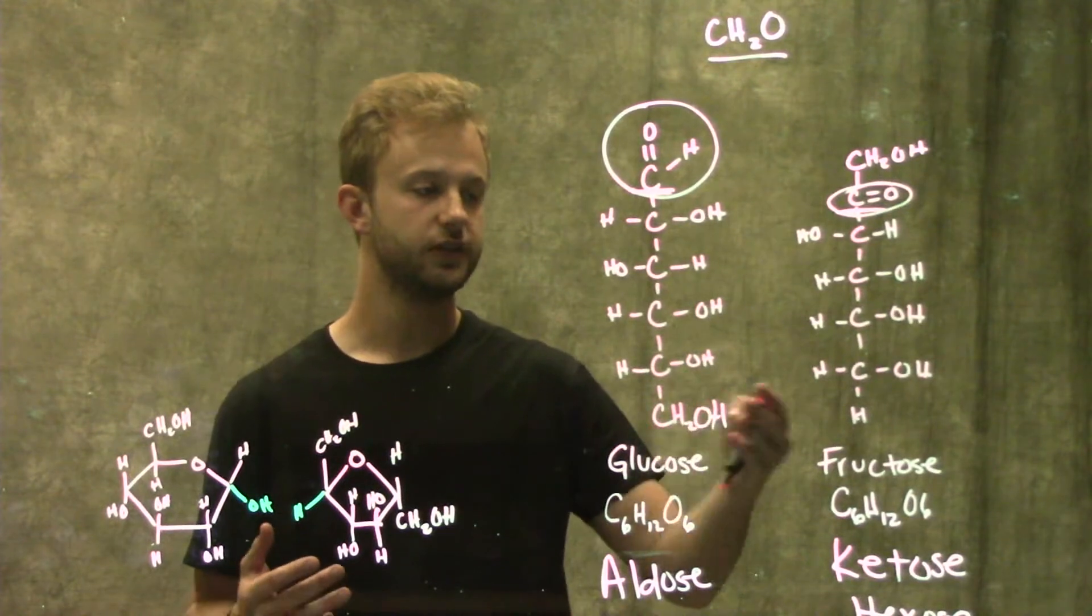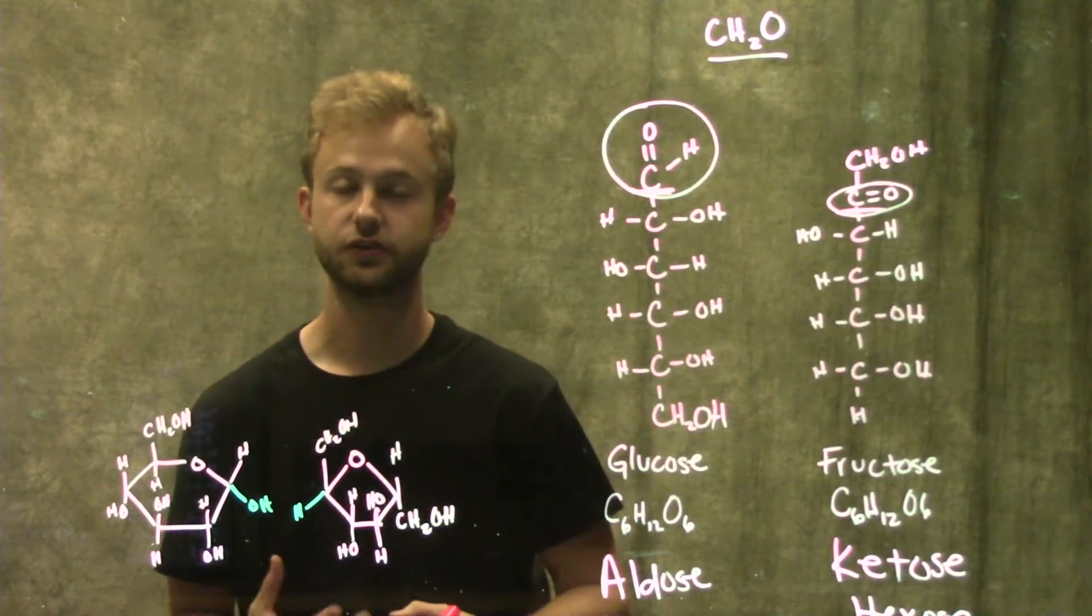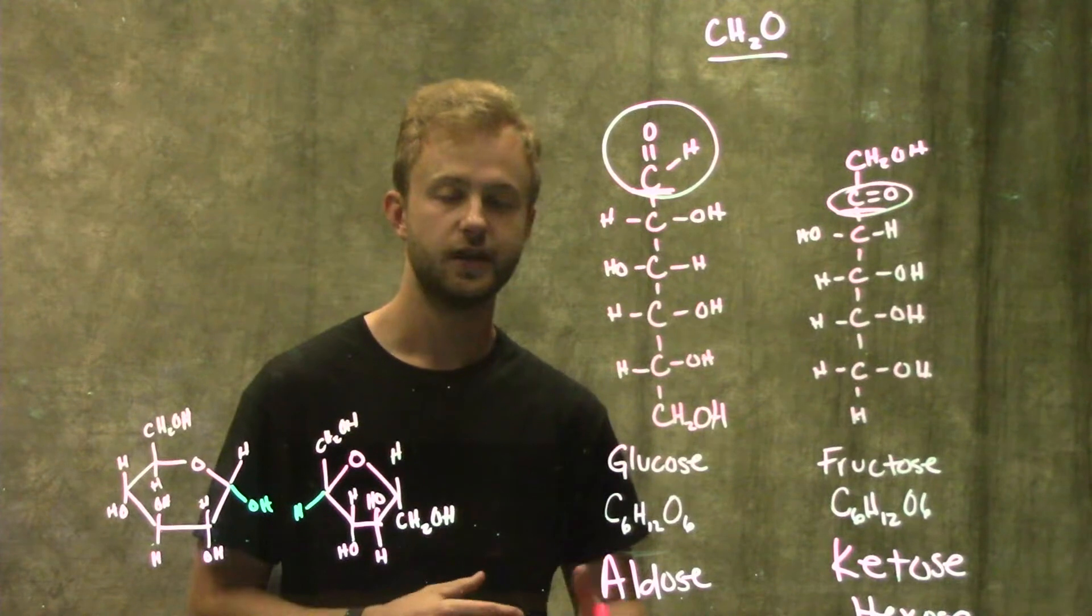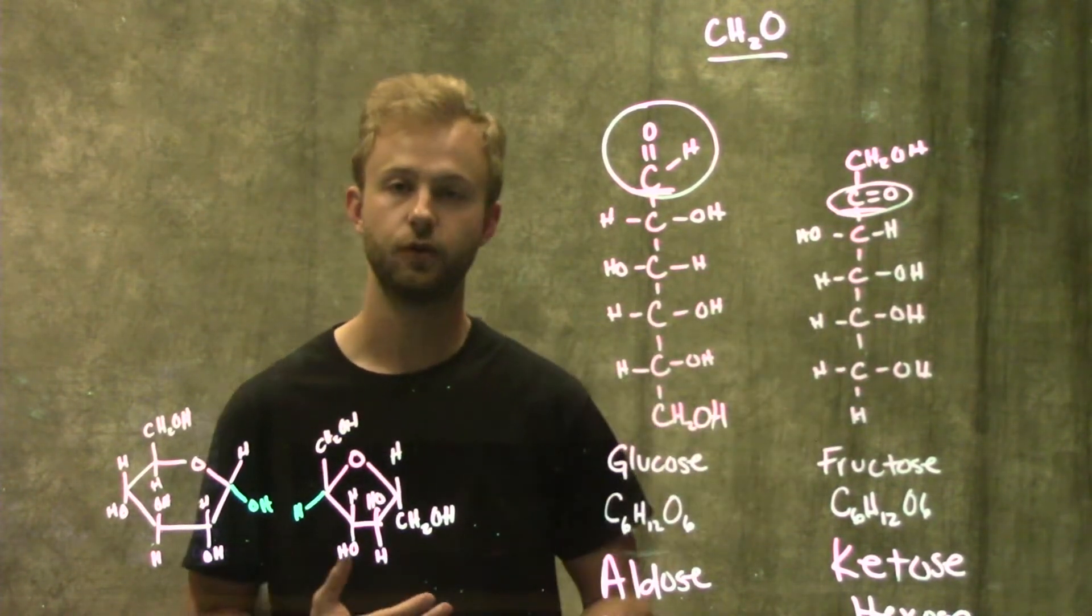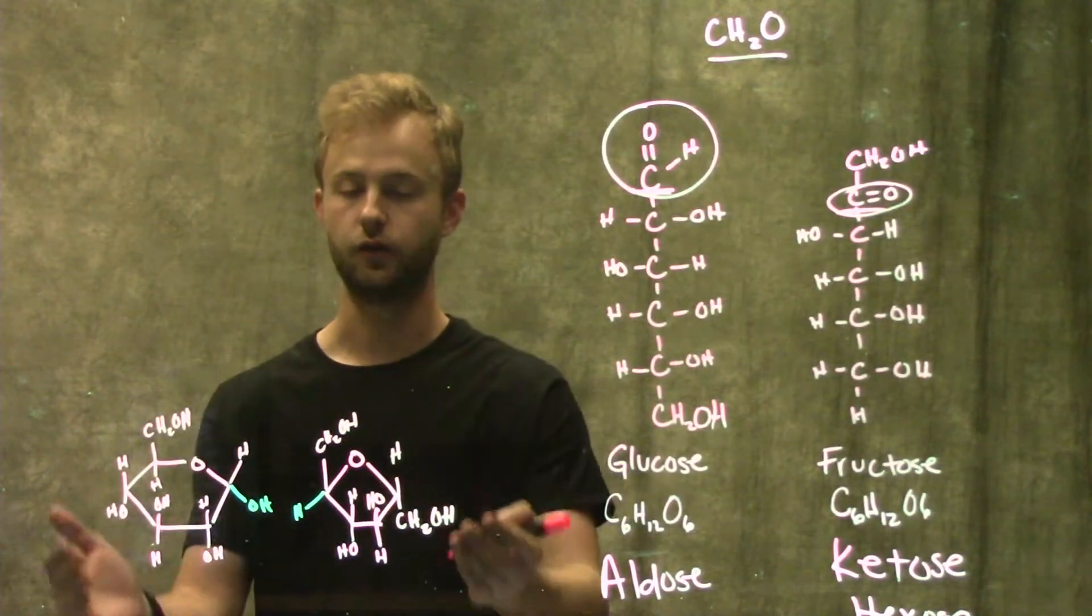Now that we understand these two molecules, we can look at how they actually behave in our cells. Most of the time in our cells and in other solutions, sugars are not going to be found in this straight chain form like this. They're actually going to be in rings.